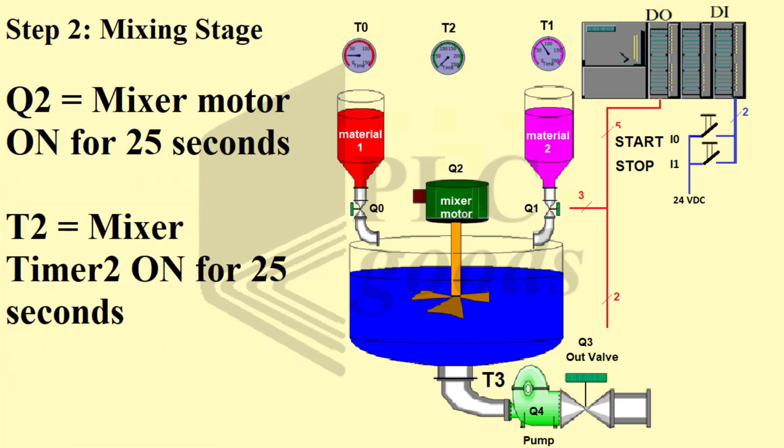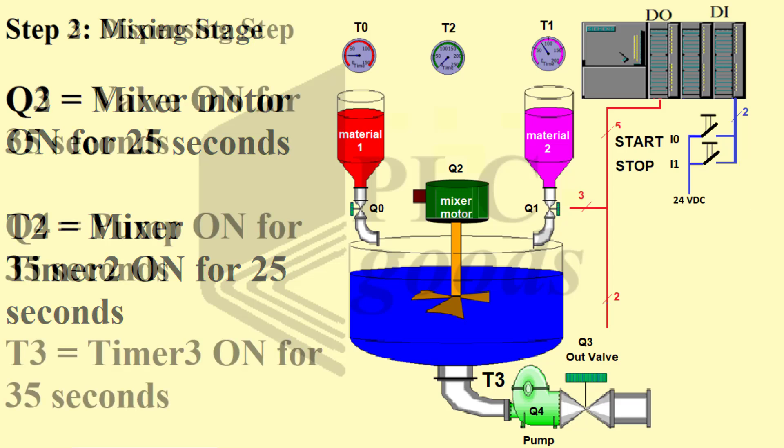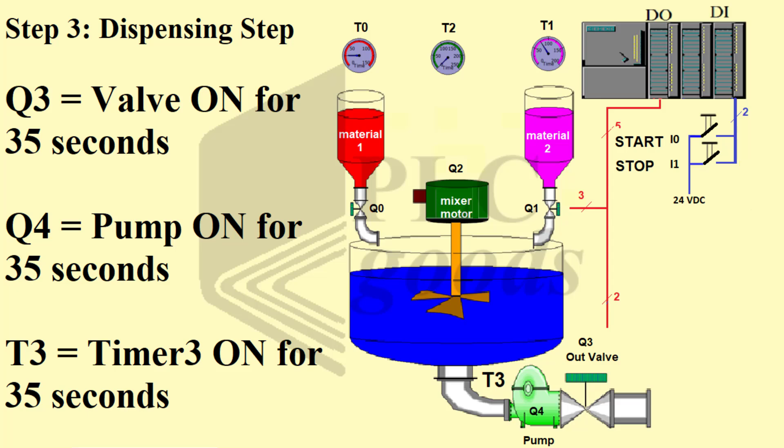Step 2 — Mixing stage: Q2 on for 25 seconds, T2 on for 25 seconds. Step 3 — Dispensing step: Q3 on for 35 seconds, Q4 on for 35 seconds, T3 on for 35 seconds.